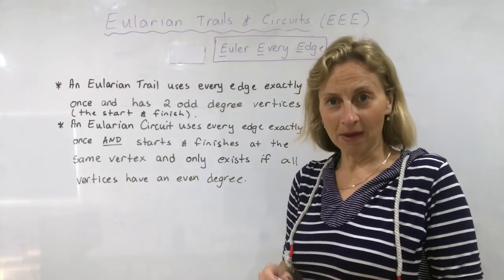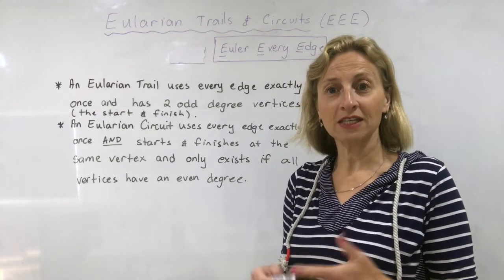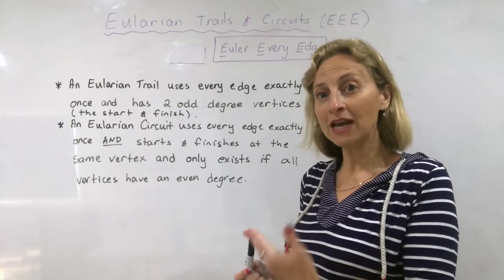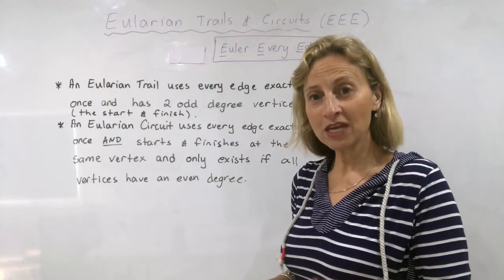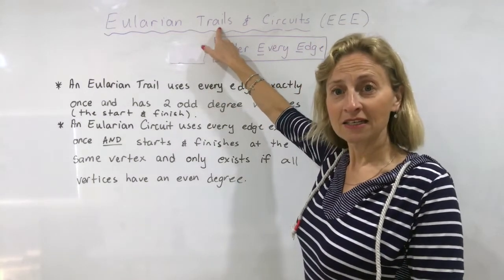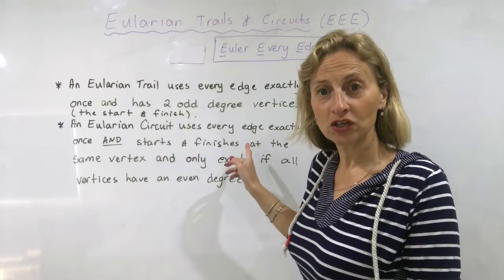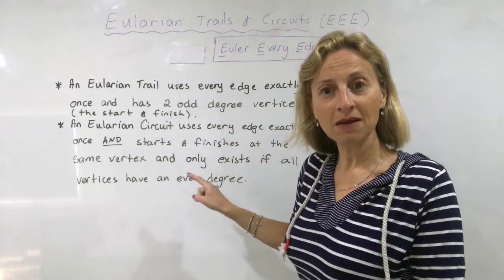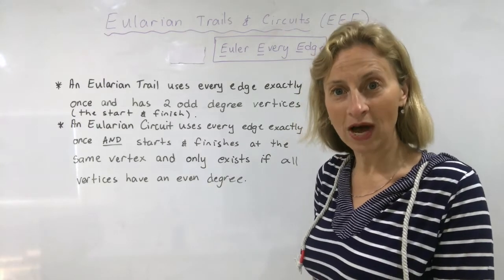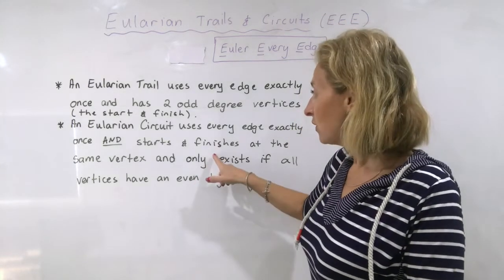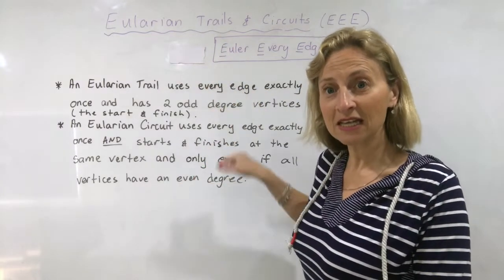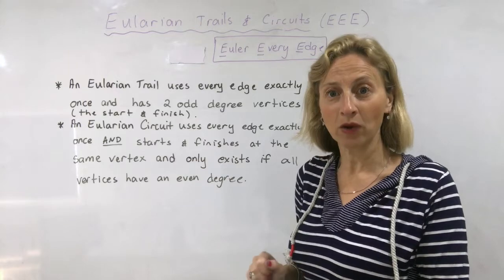If we remember what a trail and a circuit is, it makes it easy to remember what an Eulerian Trail and circuit is. So let's just recap. A trail connects the start and the finish — you can use the same vertices twice but you can only use the edges once. The circuit is exactly the same as a trail except it starts and finishes at the same point.